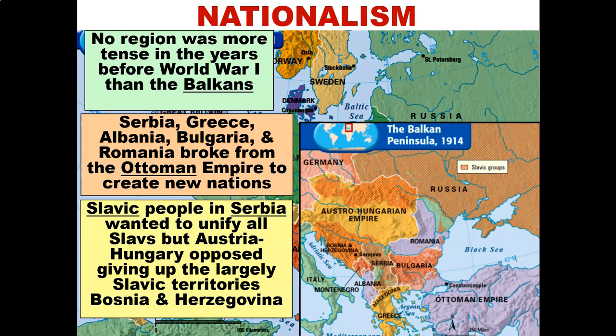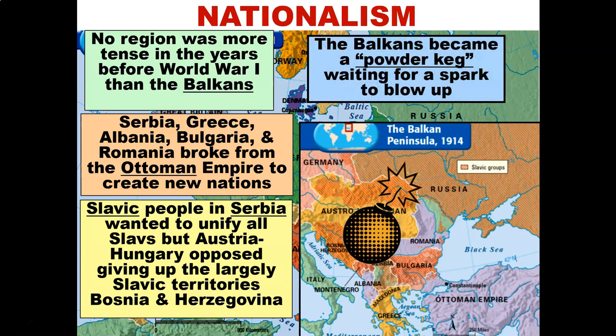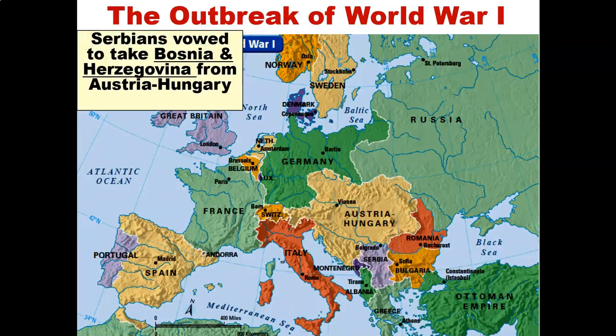Slavic people in Serbia wanted to unify all Slavs, but Austria-Hungary opposed giving up its largely Slavic territories of Bosnia and Herzegovina. The Balkans became known as a powder keg, waiting for a spark to blow up — and it did.